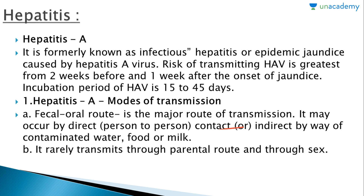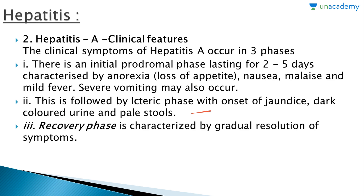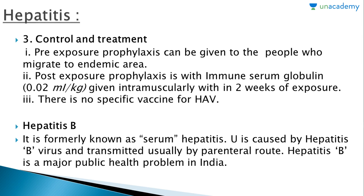It rarely transmits through the parenteral route and through sex. The clinical symptoms of hepatitis A occur in three phases. There is an initial prodromal phase lasting two to five days, characterized by anorexia, loss of appetite, nausea, malaise, and mild fever; severe vomiting may also occur. This is followed by the icteric phase with onset of jaundice, dark-colored urine, and pale stools. The last is the recovery phase, characterized by gradual resolution of symptoms.